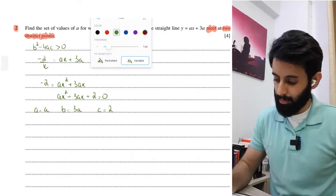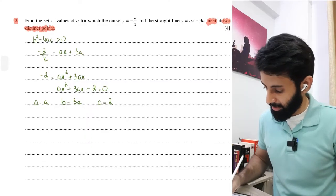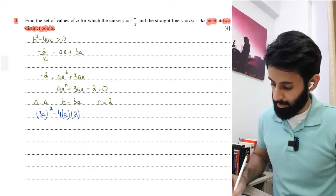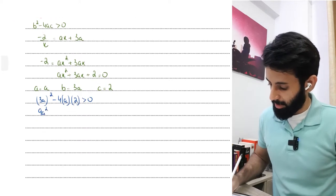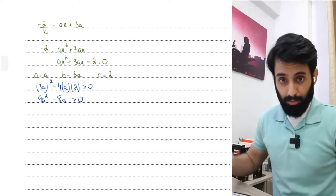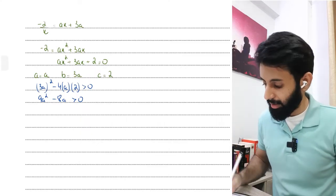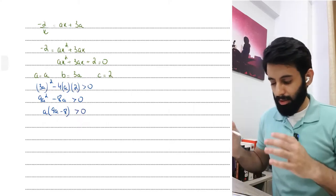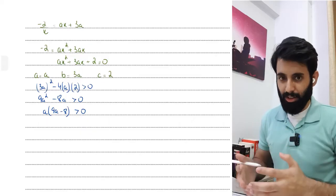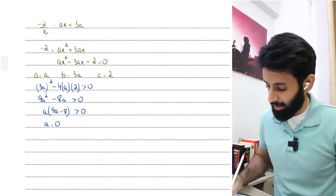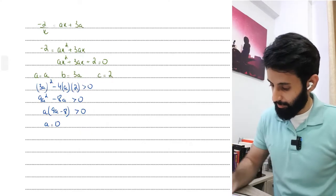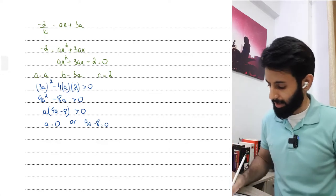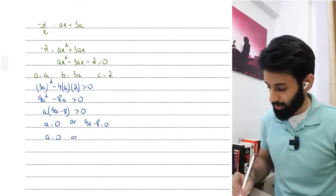Plugging into b² - 4ac > 0: (3a)² - 4(a)(2) > 0, giving 9a² - 8a > 0. Now we're dealing with a quadratic inequality. Taking 'a' as a common factor: a(9a - 8) > 0. I suggest treating this as an equation first: a = 0 or 9a - 8 = 0, so a = 0 or a = 8/9.